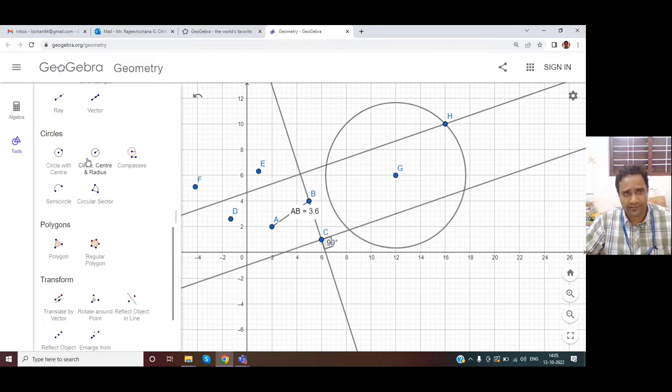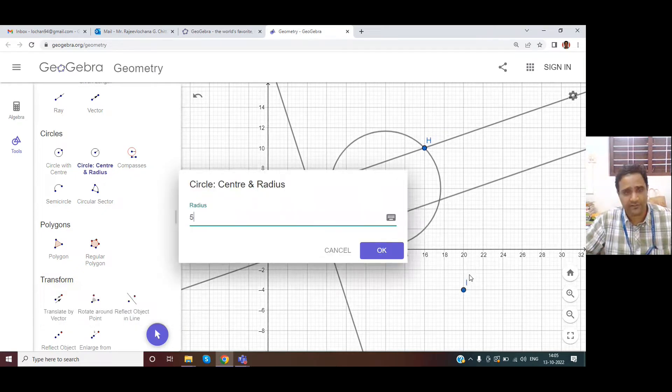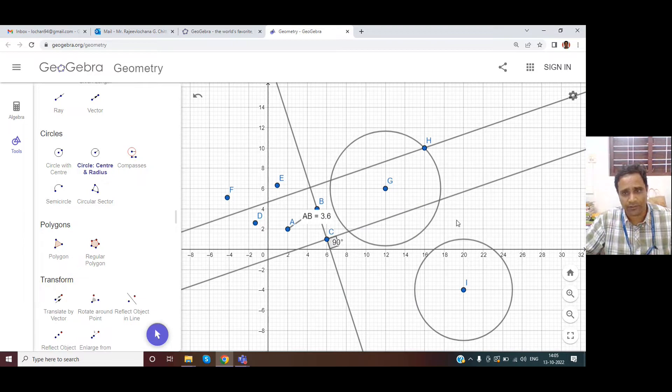In Lines, Circle, you can also have an option where user can select a point and give the radius as input, so you'll be able to draw further.